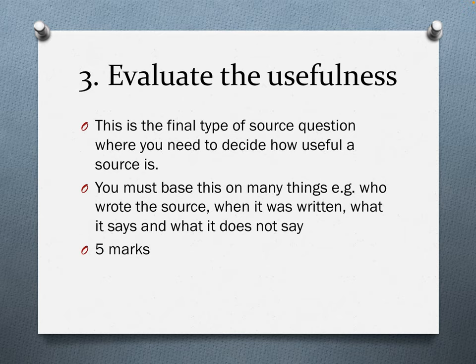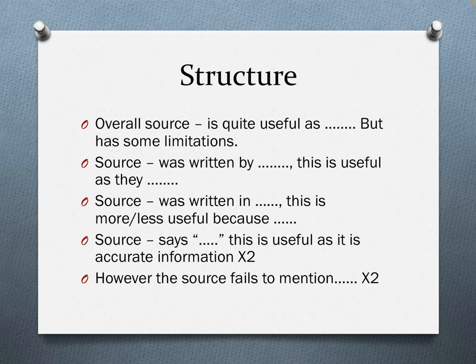The third way that you could be asked to interpret sources is the evaluate usefulness question. This is the final type of source question, where you need to decide how useful a source is. This question is worth five marks and you have to consider who wrote the source, when it was written, what it says, and what it does not say. The structure is: 'Overall, source A, B, or C is quite useful as evidence of — the question topic — but has some limitations.' Then you talk about who it was written by and why that's useful, when it was written and why that's more or less useful, then source quotes, and finally things the source fails to mention.